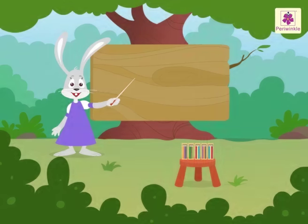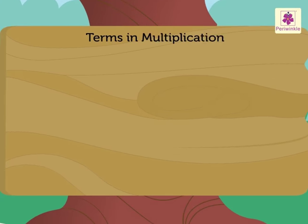Before we start, let us revise the terms used in multiplication and division. Look at the example. 5 into 4 is equal to 20.